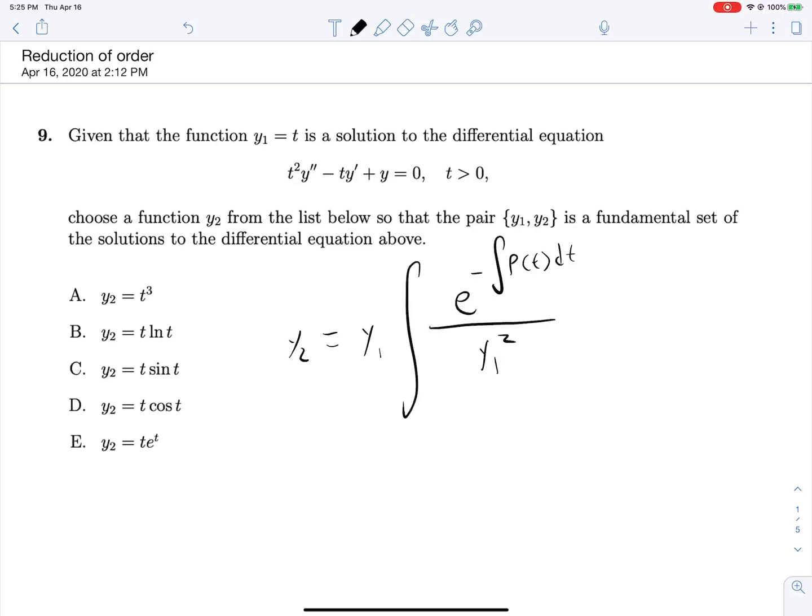Just to identify where all of these things are coming from, in these questions we will always be given one function of our fundamental set of solutions and we're told to find the other one. This is our y1 and then p of t is whatever is connected to y prime as long as the coefficient on y double prime is one.